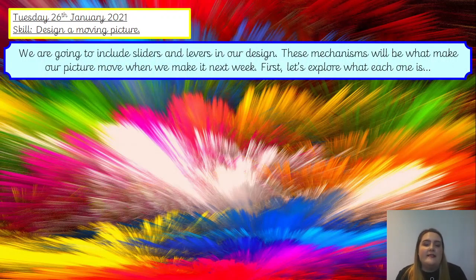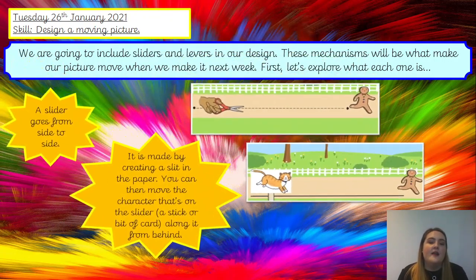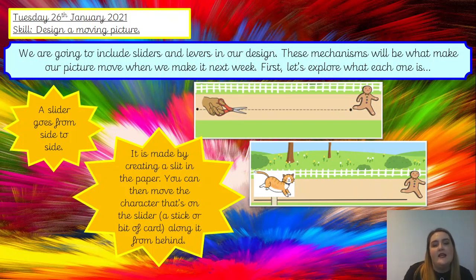We are going to be using sliders and levers in our design. These mechanisms will be what make our aspects of our picture move when we come to make it next week. A slider goes from side to side and it's made by creating a slit in the paper. You can see here we've cut two little holes in the paper and we're cutting all the way down to make this nice, neat line where we can push our slider through.